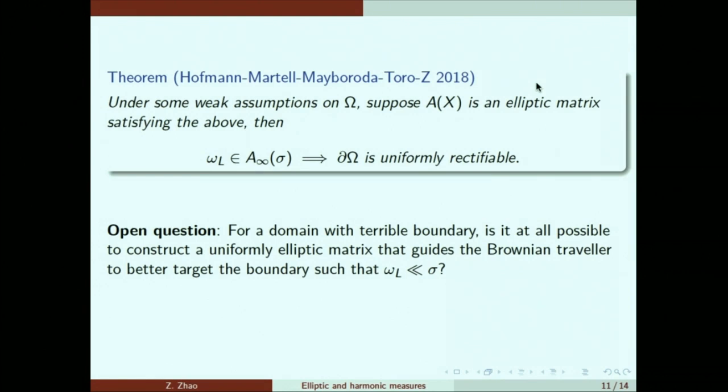So some open questions. We don't know that, so suppose we're given a domain with a terrible boundary, is it possible at all to construct an elliptic matrix that carefully leads the way of the Brownian traveler to better target the boundary so that it sees all portions equally in some sense? We don't know the answer to this. For now, we only know for this specific class of elliptic matrix, the answer is no. Even though it's very general, we still don't know for any uniformly elliptic matrix, is it possible?